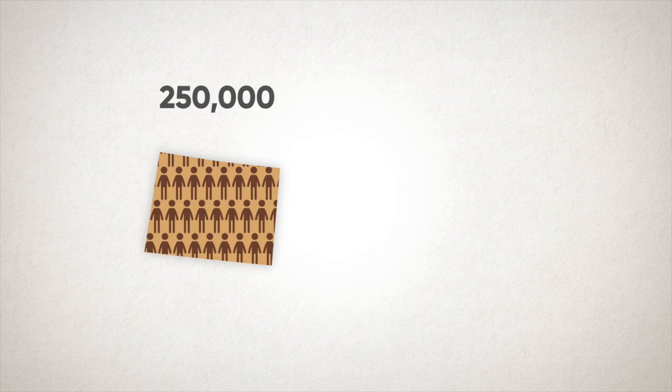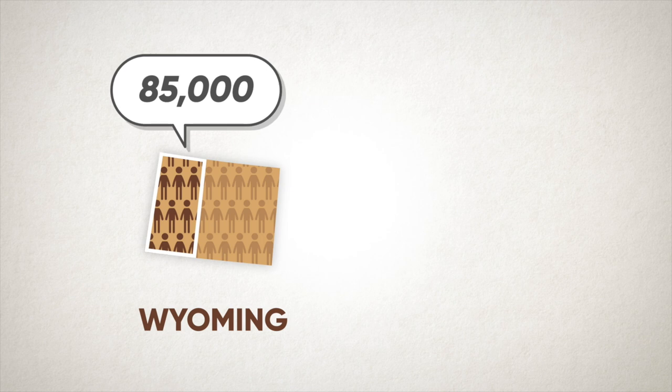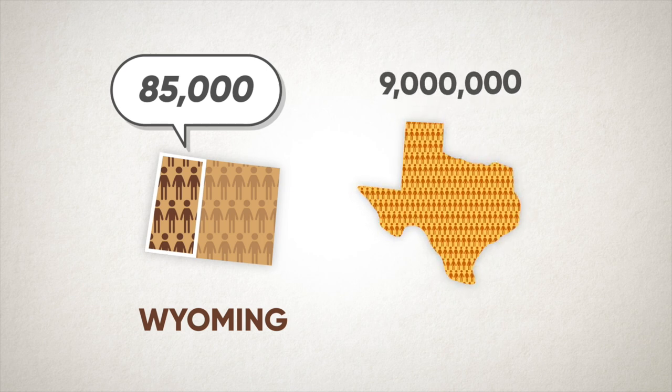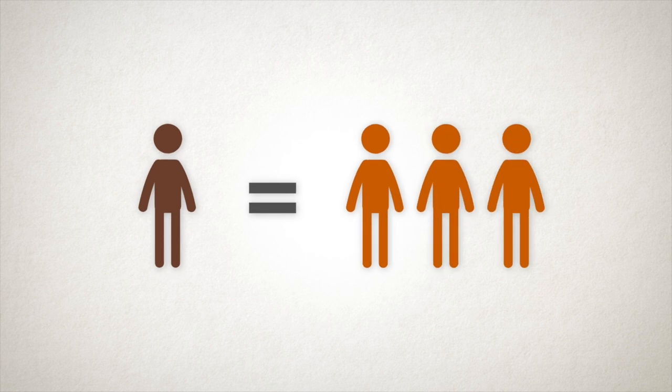This allocation of electoral votes is one source of debate about the Electoral College. Since every state gets at least three electoral votes, smaller and less populous states generally have more electoral votes per voter than larger states. In 2016, about 250,000 people voted in Wyoming, meaning each of Wyoming's three electoral votes represented about 85,000 voters. But almost nine million people voted in Texas, so each of that state's 38 electoral votes represented about 240,000 voters — almost three times as many.